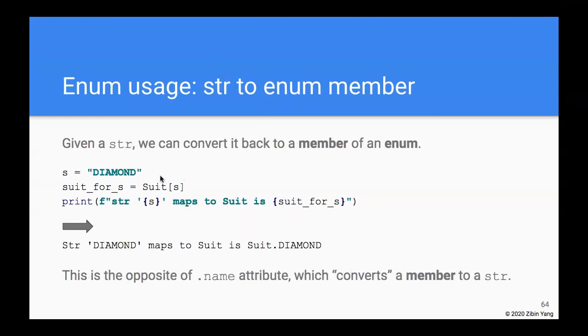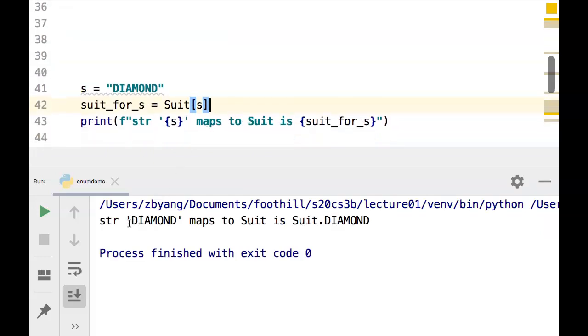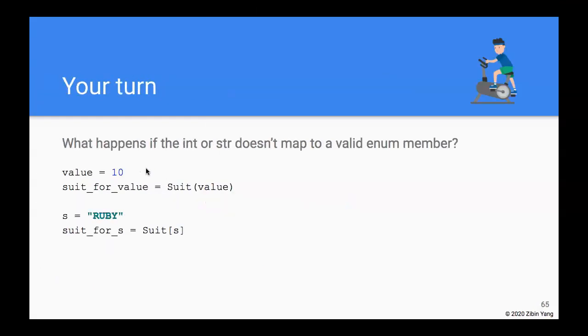Very similarly, if we are given a string literal that looks like one of the enum members, such as 'DIAMOND', we should expect to be able to convert that string literal back into a member of the enum as well. Now the syntax is a little different. Instead of Suit with parentheses as in the previous case, if we want to convert a string back to an enum member, we use square brackets. So if we run this, the string 'DIAMOND' maps back to an enum member in the suit, which would be Suit.DIAMOND as we would expect.